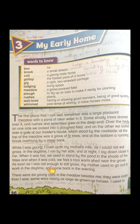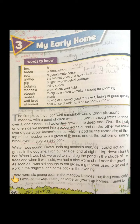"As soon as I was old enough to eat grass, my mother used to go out to work in the daytime and come back in the evening." Who is telling all that routine? Black Beauty is telling all that. You see, horses, although they are animals, do have necessities of their life. They have their own experiences about their lives. They cannot talk like humans, but they have feelings. So here he is telling us about his life.